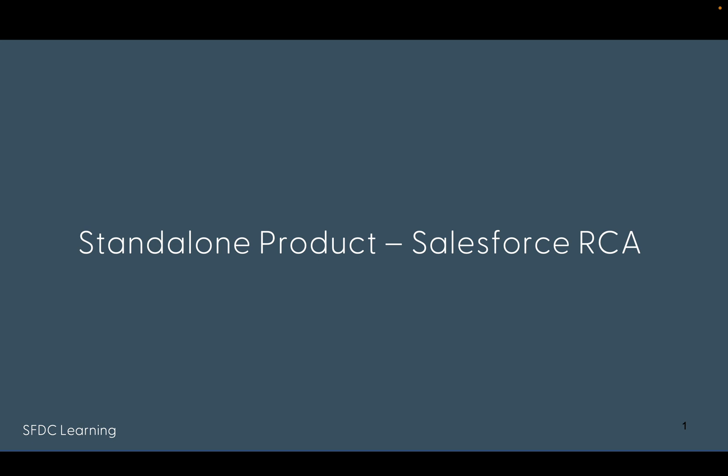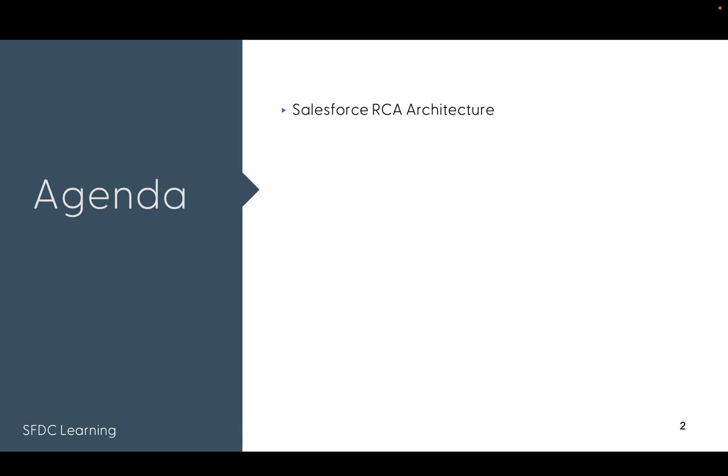Today we are going to learn about product configuration and how a product can be configured in Salesforce RCA. This is divided into two parts: standalone product configuration and bundle. Right now we are going to explore how to create a standalone product in Salesforce RCA.